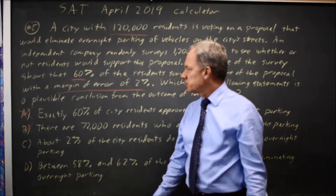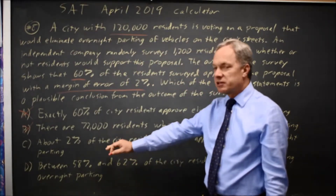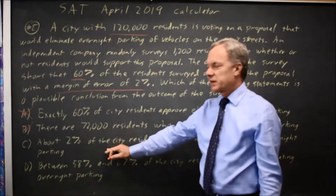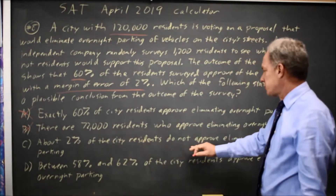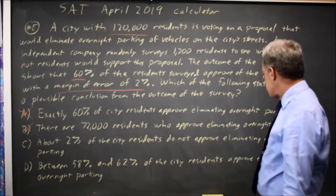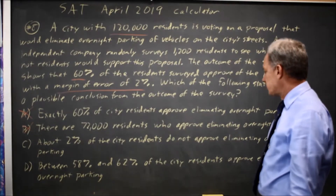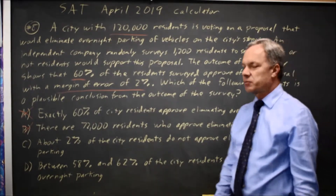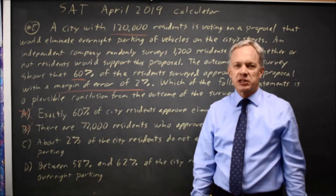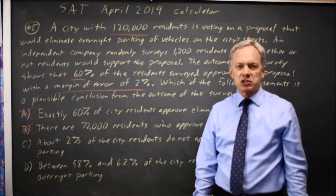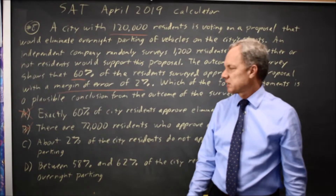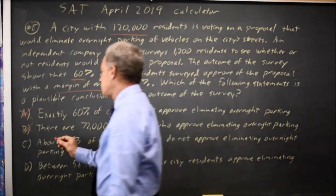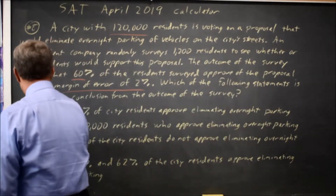Choice C takes the 2% margin of error and says that means about 2% of city residents do not approve of eliminating overnight parking, but that's not what margin of error means. So Choice C would be wrong.